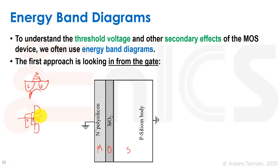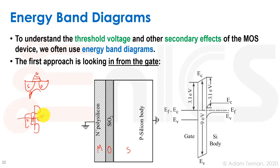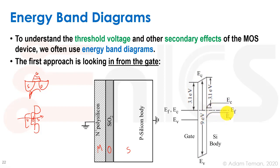When we draw the energy band diagrams, we can see the energy bands — the Fermi voltage, the conduction band, and the valence band of the conducting gate. We have the potential barrier of the oxide over here, and we have the energy band diagrams of the substrate in this area.